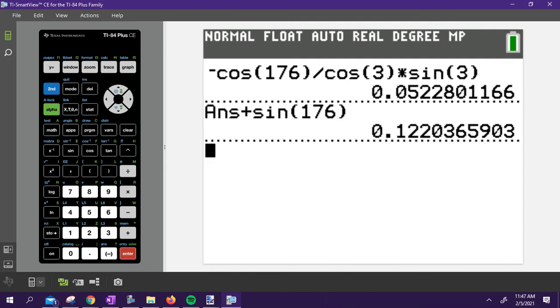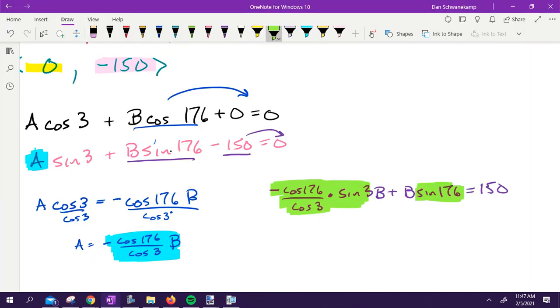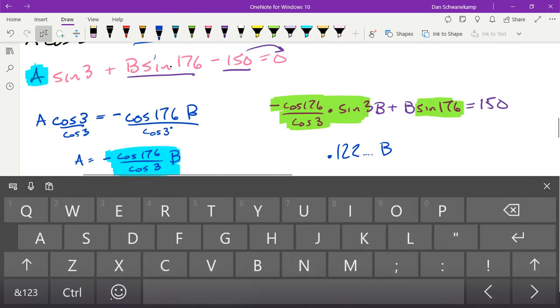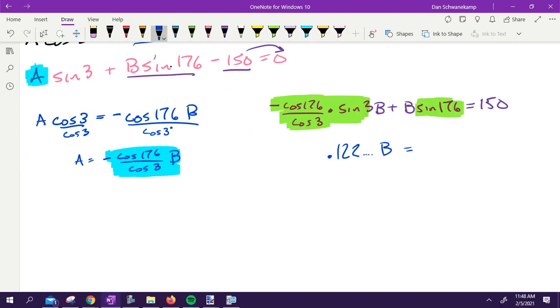I get that right there. That is how much B I have. Point one two two B. I'm not really rounding it, I'm just writing it down so we can see it. Point one two two B now is going to be equal to 150. I want to get B by itself, so what else do I need to do?